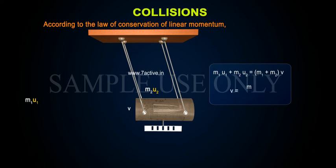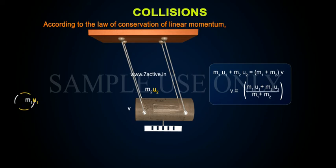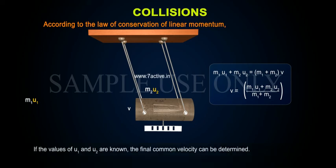Therefore, v = (m1·u1 + m2·u2) / (m1 + m2). If the values of u1 and u2 are known, the final common velocity can be determined.